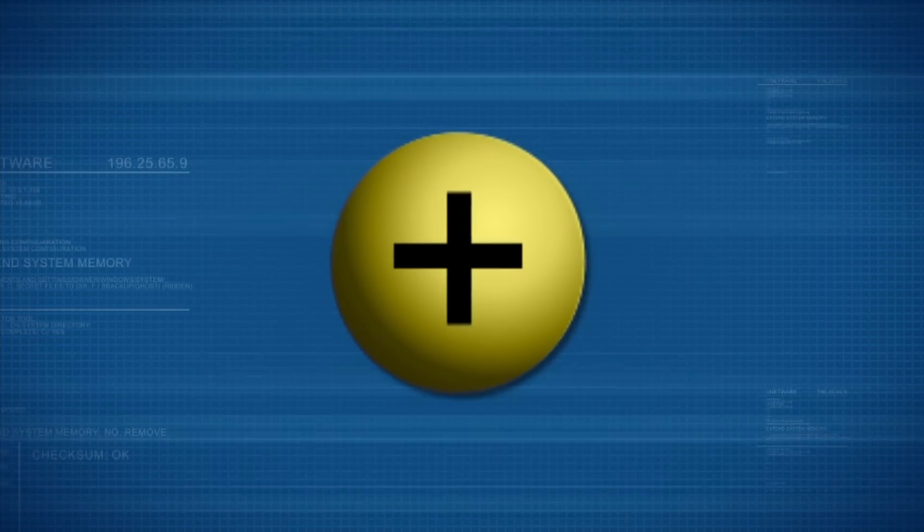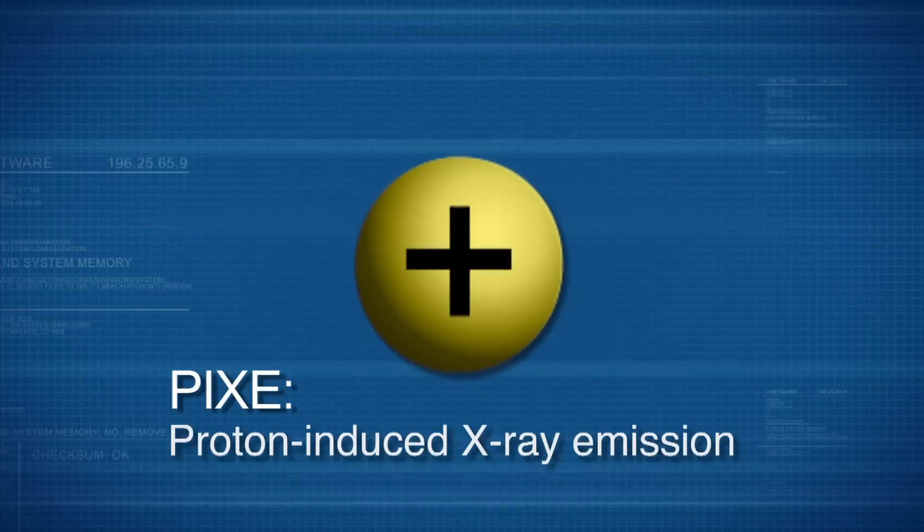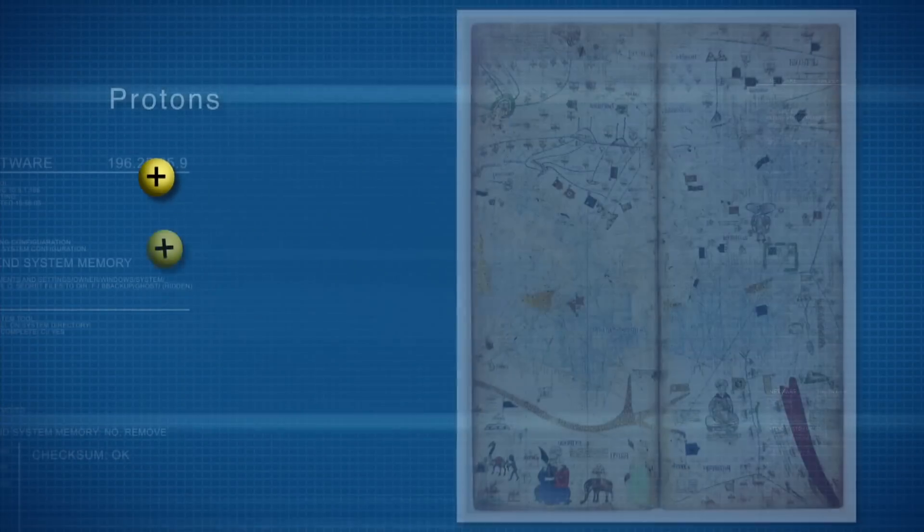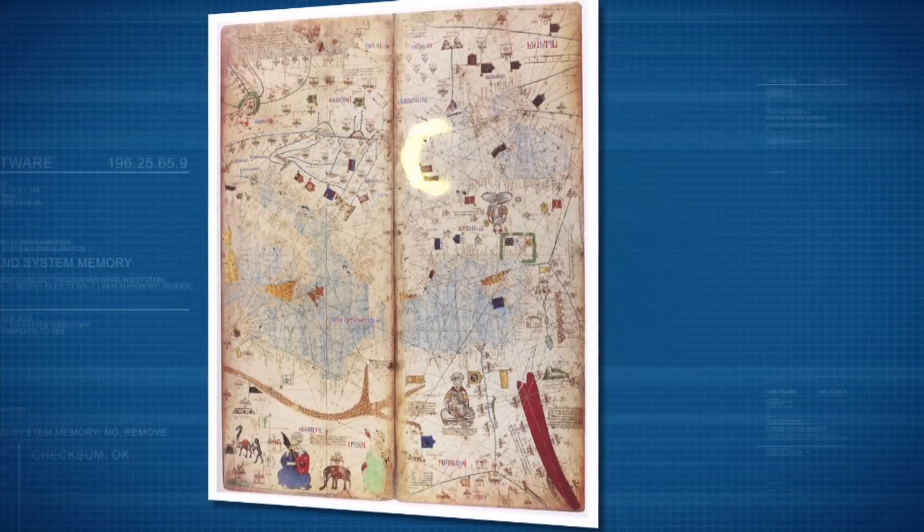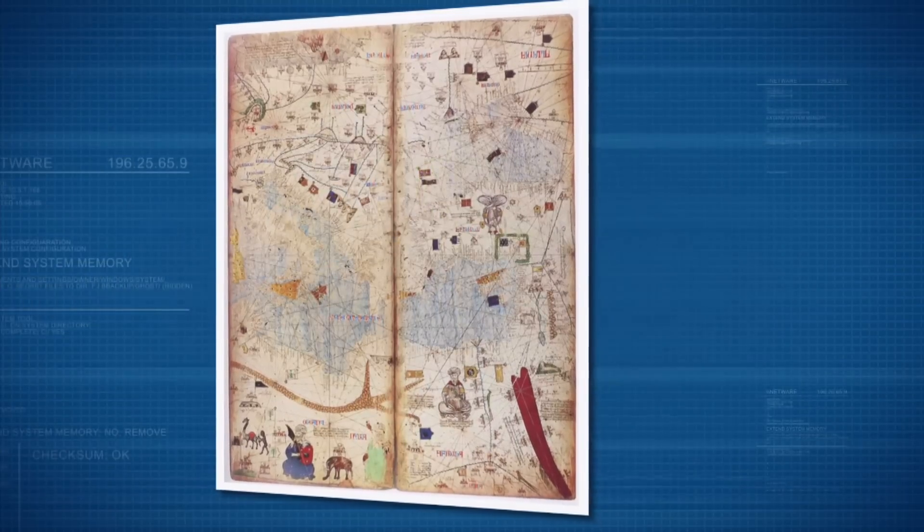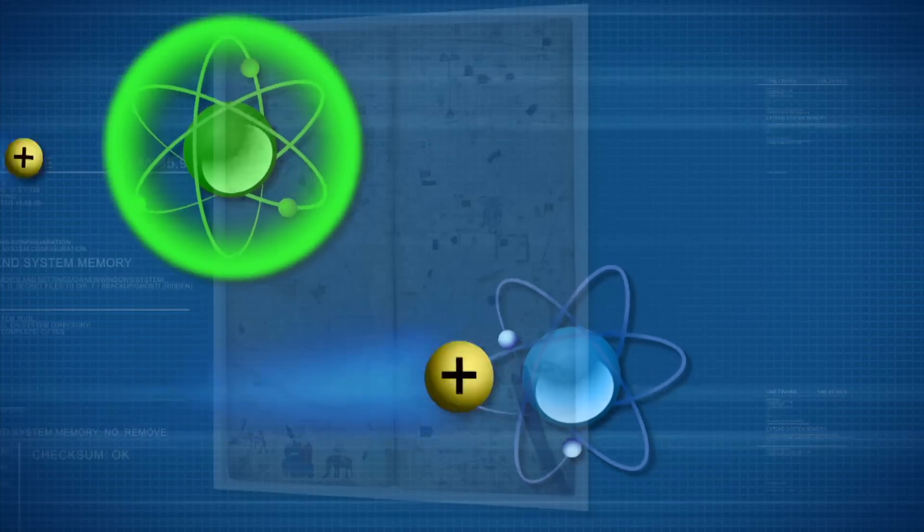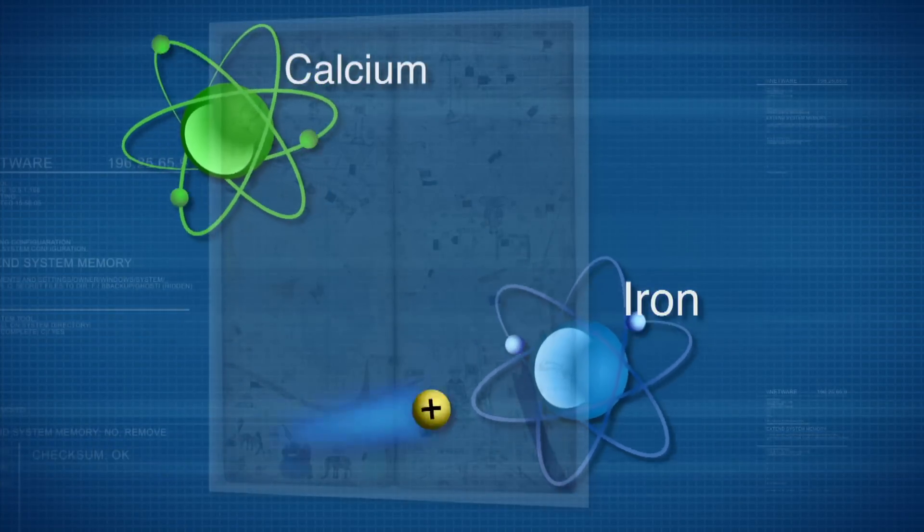And a second technique, called proton-induced x-ray emission, accelerates positively charged particles called protons towards a specific material like paint in a portrait. This process deposits energy into the material's electrons, releasing x-rays that reveal the specific atomic elements in the material.